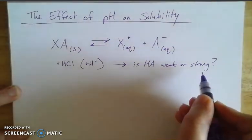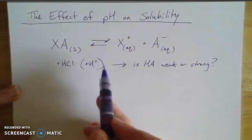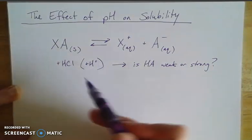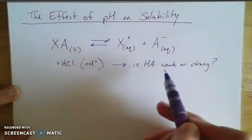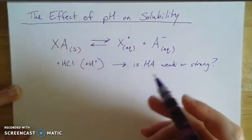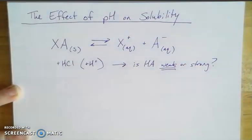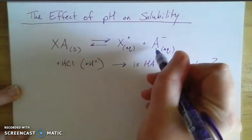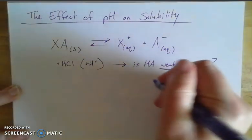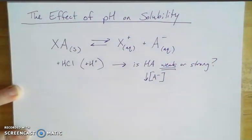Because that's going to determine whether or not adding an acid is going to have an impact. If it is strong, then there's not going to be any impact from this addition of hydrogen ions, because when I add the hydrogen ions, if this is a strong acid HA, it's going to just fall apart anyway. If it's weak though, if it's a weak acid, then that's going to functionally pull this ion out of solution. That's going to decrease my concentration of my anion.